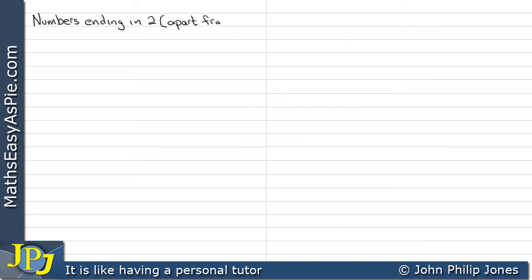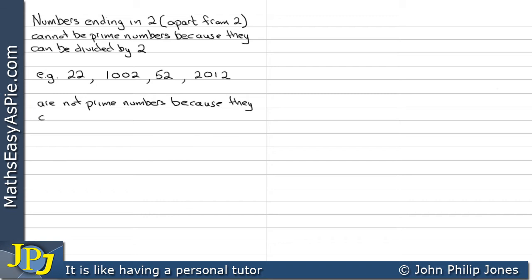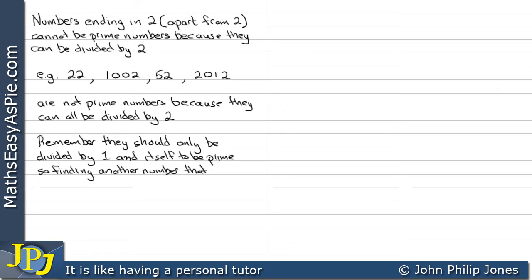Numbers ending in 2, apart from 2, cannot be prime numbers because they can be divided by 2. For example, all of these here end in 2 and are not prime numbers because they can all be divided by 2. Remember, they should only be divided by 1 and itself to be prime. So finding another number that will divide exactly is enough to show that the number is not a prime number.